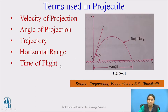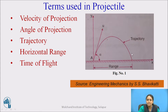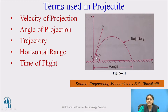Next is horizontal range — the distance of the particle from the origin up to the point where it touches the ground is called the horizontal range. If you observe this figure, the particle starts from point A and after some distance reaches the ground level again. This distance from point A is the horizontal range. Time of flight is the time taken by the particle to reach the ground surface after being projected.